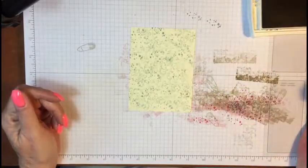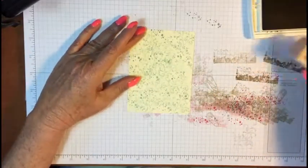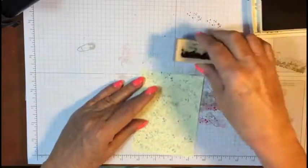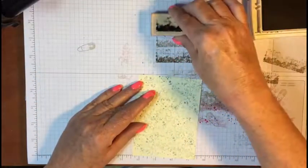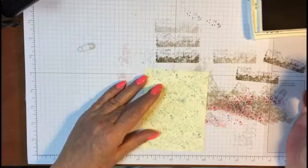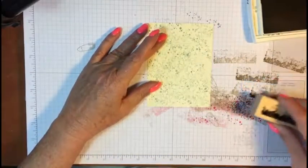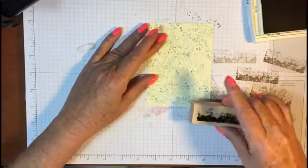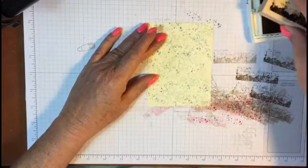See the second layer, so we may even have to do a third layer. Let's see. Yeah, stamp off twice and we're just gonna bring this in just a little bit.